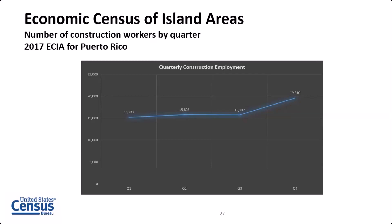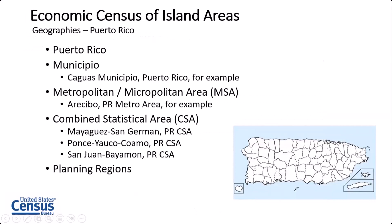We also release a lot of detailed geographic data for Puerto Rico. We will release statistics on the territory overall, by municipio (which is a county equivalent), by metropolitan and micropolitan area, by combined statistical area — of which there are three in Puerto Rico: Mayaguez, Ponce, and San Juan — and then by the planning regions, which are combinations of municipios.